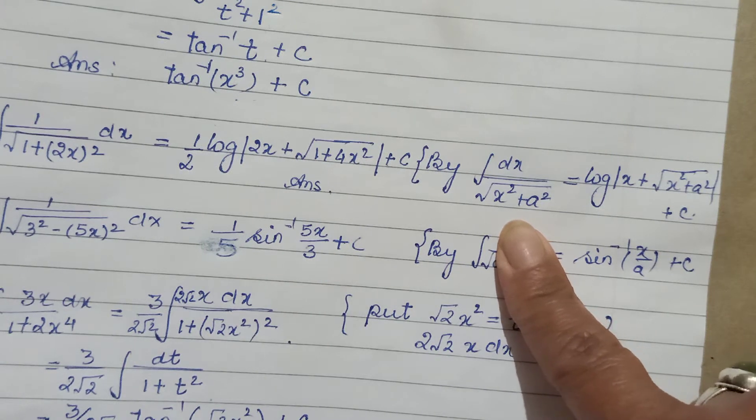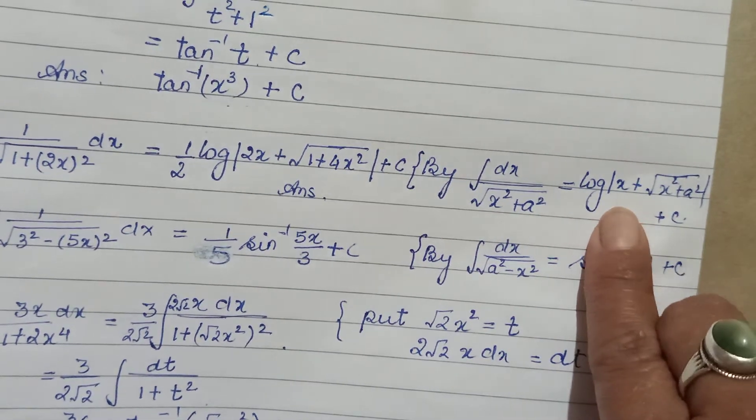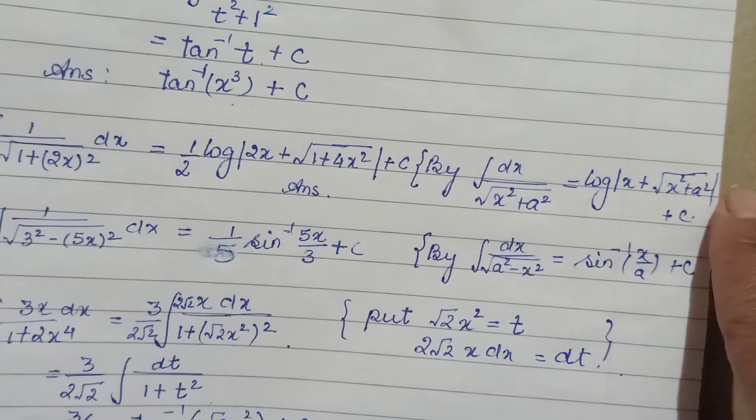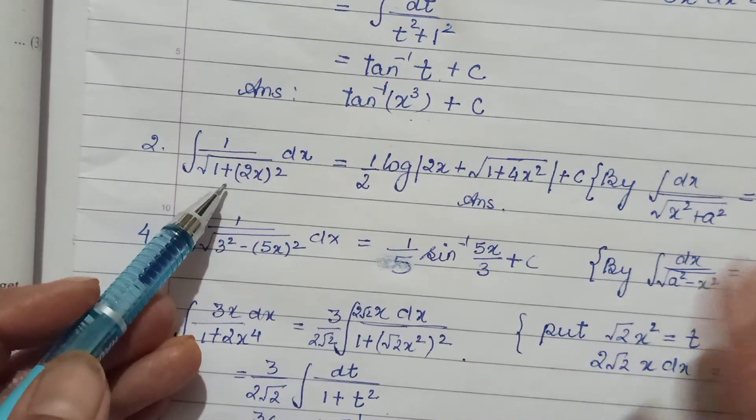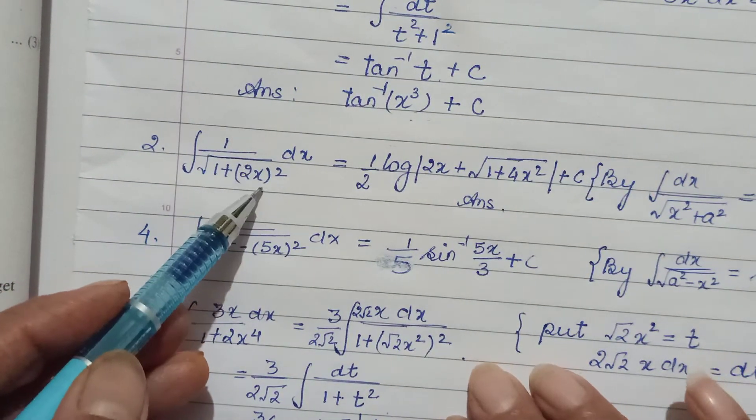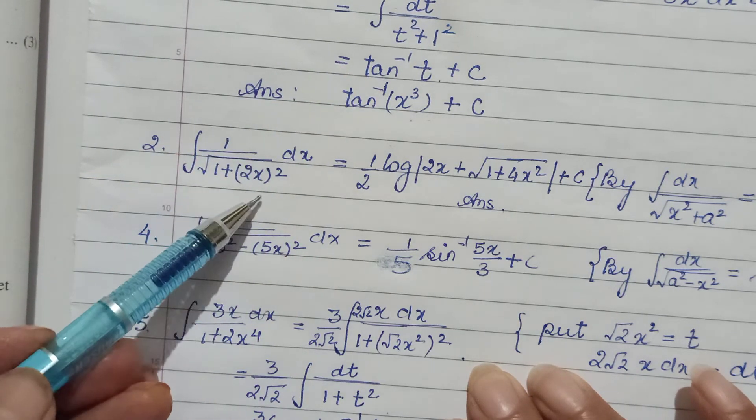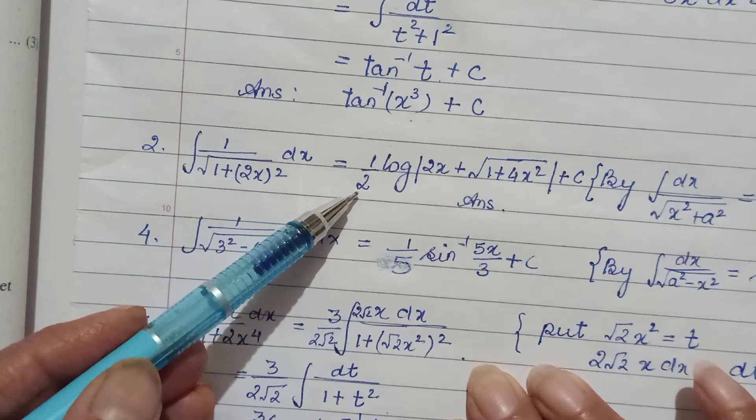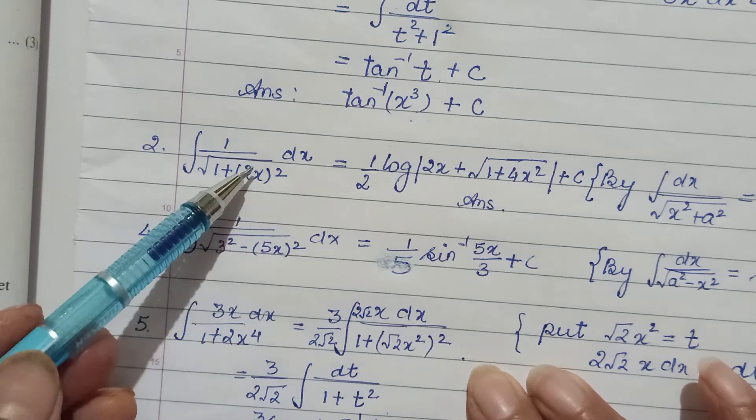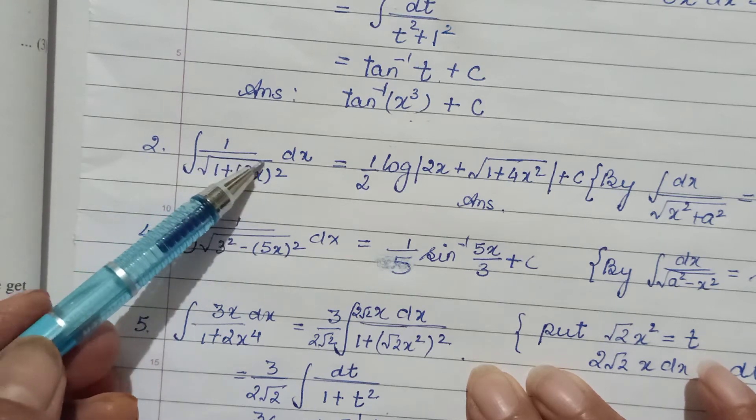For that, the result is log|x + √(a² + x²)|. This is the standard form. If we put this as t, I haven't shown that substitution because it's just a scalar - we can do it mentally, assuming this as t. The result is applicable straight away.